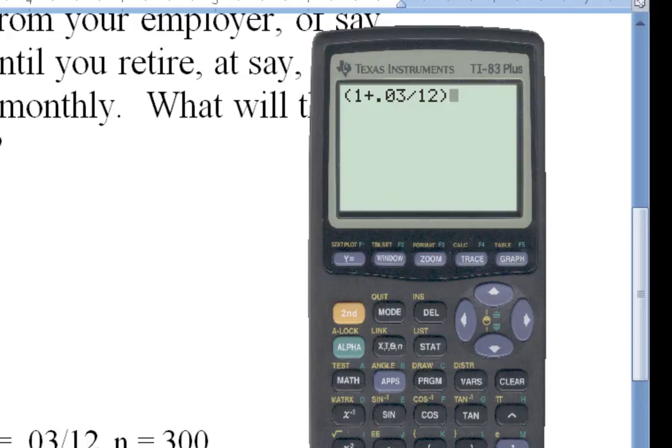And then I put parentheses here. And then n, in this case, the exponent, so that'll be 300. And then I'm doing the numerator part of this listing in the parentheses. So that's going to be minus 1. And I hit enter. So that gives me that value.